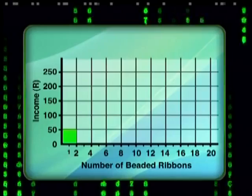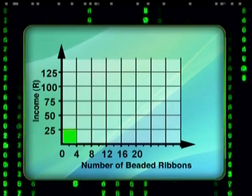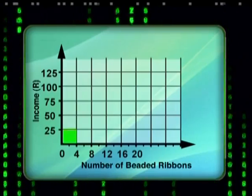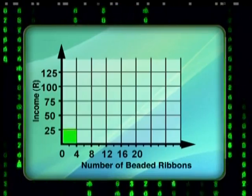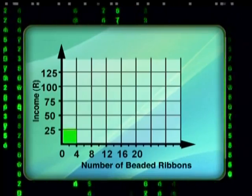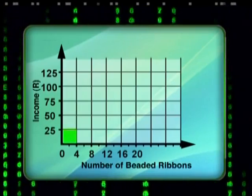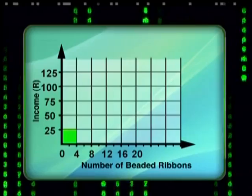That's one solution, though you could have kept your graph paper the usual way and then chosen each large block on the horizontal axis to represent four beaded ribbons, and each large block on the vertical axis to stand for 25 rand. Both choices of scale will fill most of the graph paper. Now plot your values — that's the easy part.